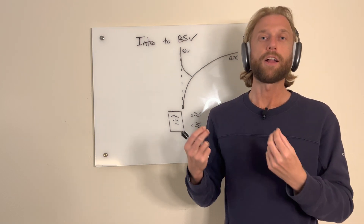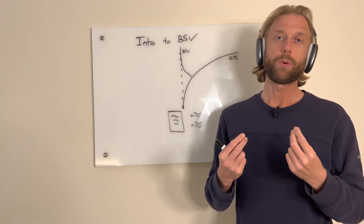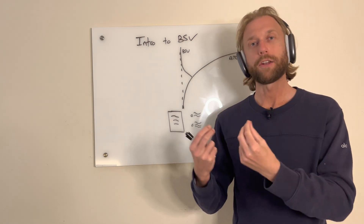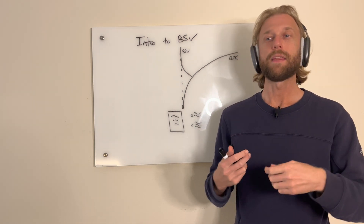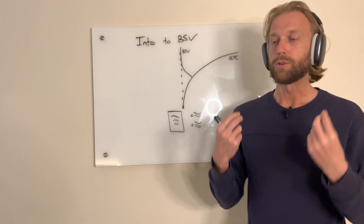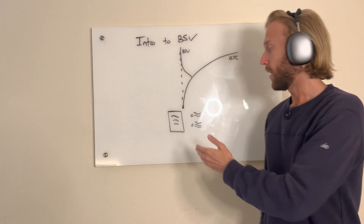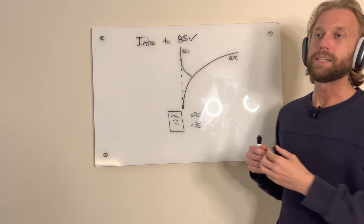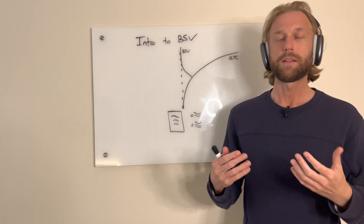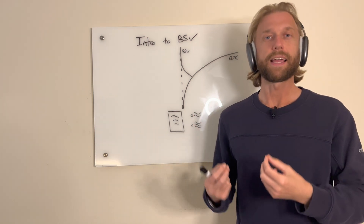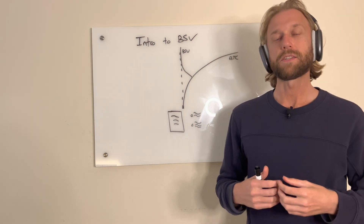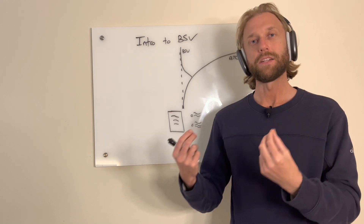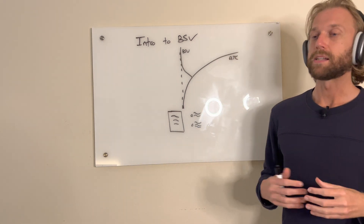Base layer protocols like TCP do not change. This is especially true when we're talking about a protocol that has to do with money — it's even more important that it's set in stone, because people contract with money. If you change the money you break all those contracts. This was mentioned in the early writings of Satoshi. Bitcoin is not like an app or mobile OS that gets new features every year — it's like TCP, set in stone.